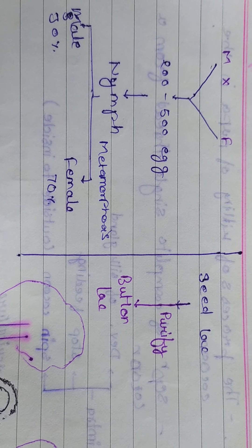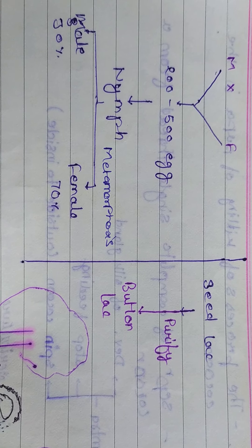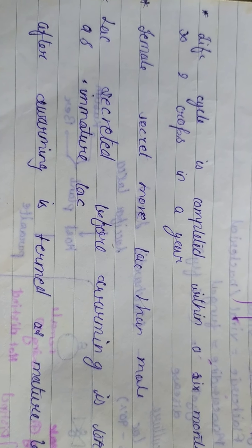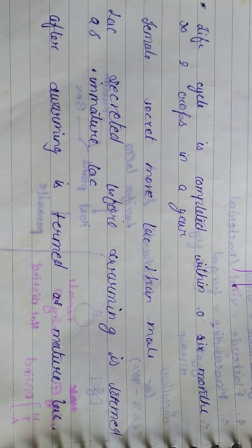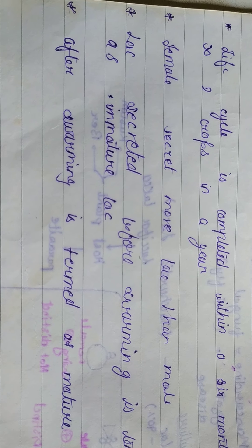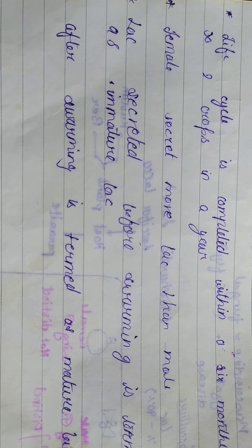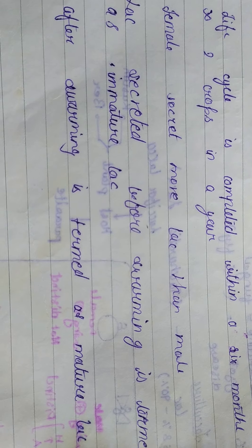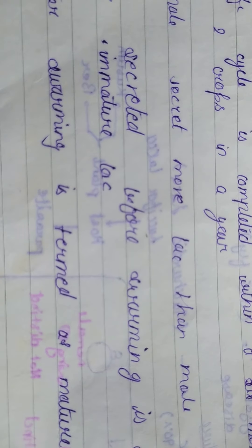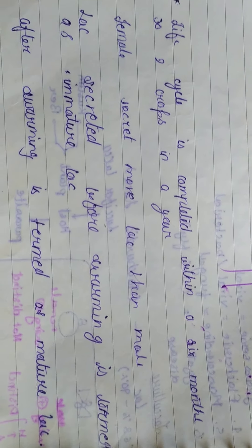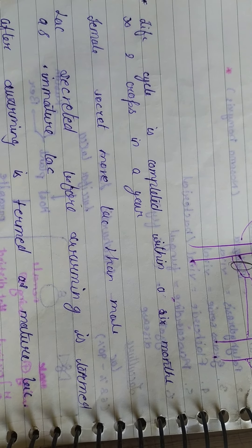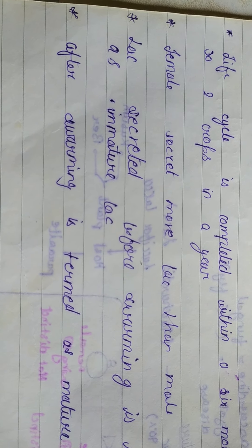Seed lac is the primary lac product, which is further purified into button lac. When seed lac is put into the purification process, it gets refined. The life cycle is completed within six months, giving two crops per year. Female lac insects secrete more lac than males.